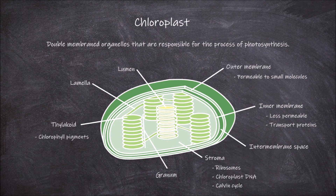In addition to chlorophyll pigments, the thylakoid membrane also has proteins that make up a photosynthetic electron transport chain, and ATP synthase, which is where the light-dependent reactions of photosynthesis take place.